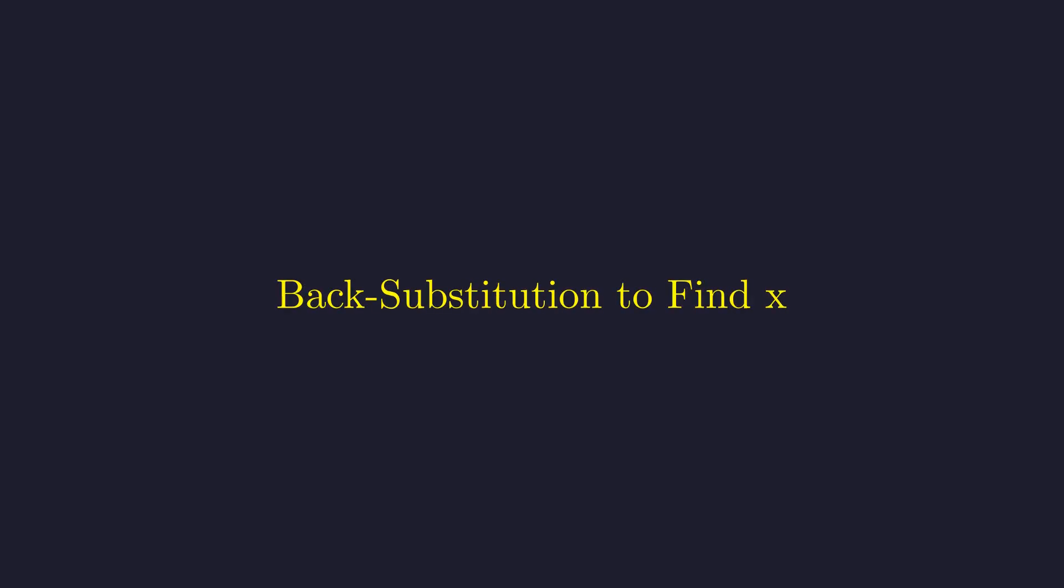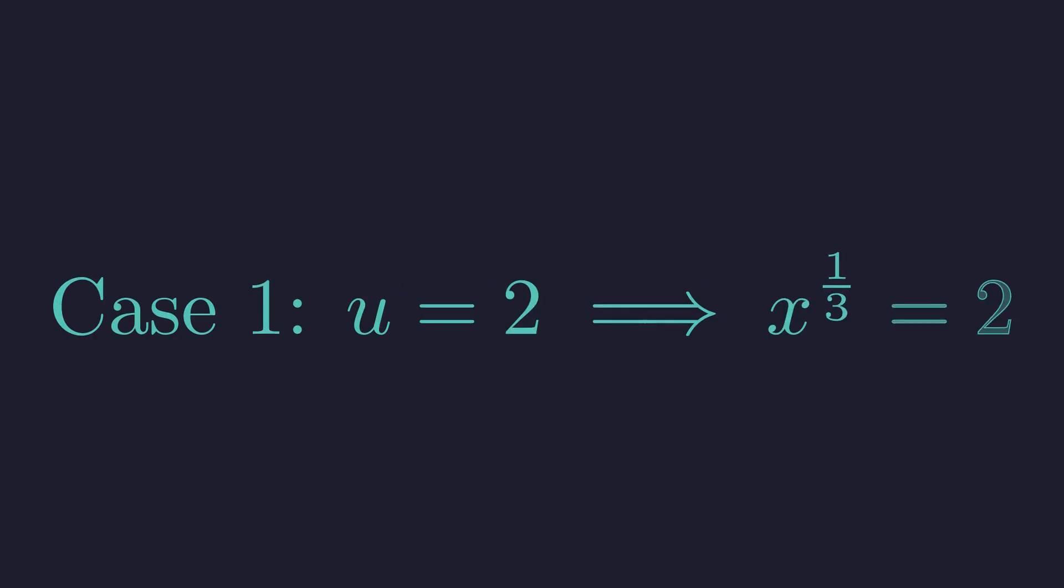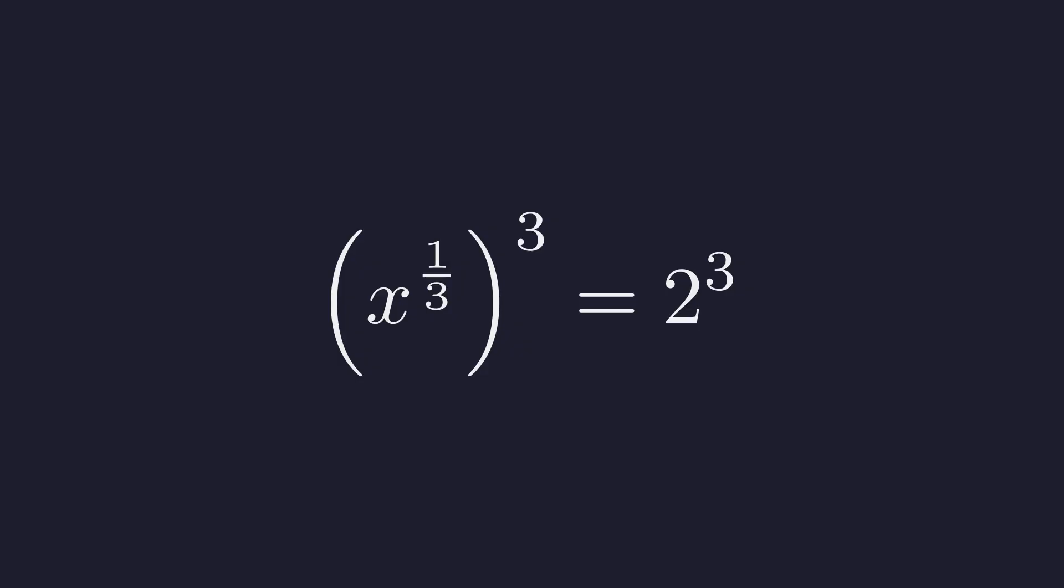All right, we found u, but remember, we actually care about x. So let's substitute back. Starting with the first case, if u equals two, then x to the one-third equals two. To solve for x, we cube both sides, since cubing undoes the cube root. And we get x equals eight.